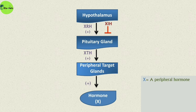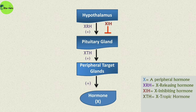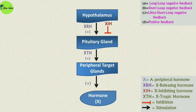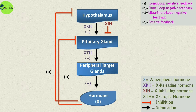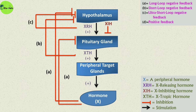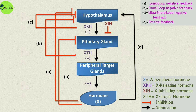In the diagram: X is a peripheral hormone; XRH is X-releasing hormone; XIH is X-inhibiting hormone; XTH is X-tropic hormone. Red marks denote inhibition and arrows denote stimulation. When hormone X negatively feeds back to the pituitary or hypothalamus, it is long loop negative feedback. When tropic hormones from the pituitary feed back negatively to the hypothalamus, it is short loop negative feedback. When hypothalamic releasing and inhibiting hormones feed back to inhibit their own production, that is ultra-short loop negative feedback. When hormone X sends positive impulses to increase its own production, that is positive feedback control.